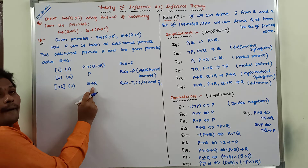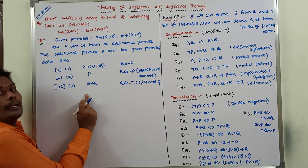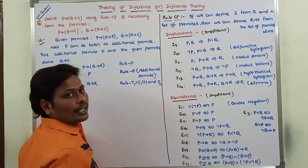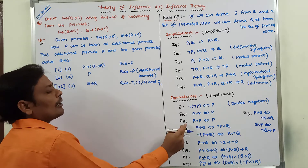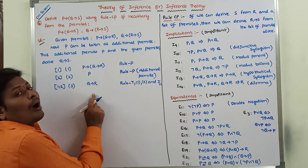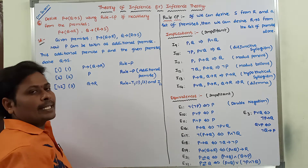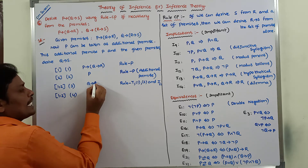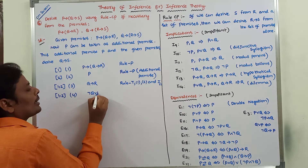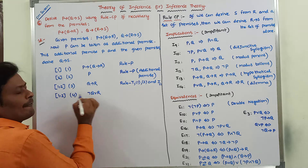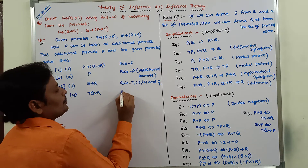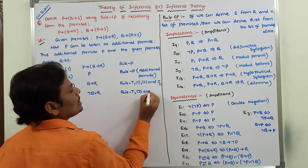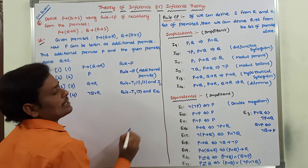This Q conditional R can be written as negation Q or R by using rule E16. According to E16, I am writing negation Q or R. This is the fourth step. This step can be written as negation Q or R by using rule T applied on the third step, with equivalence rule E16.